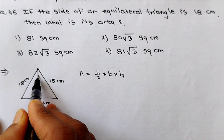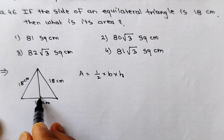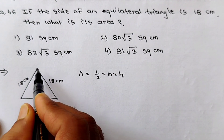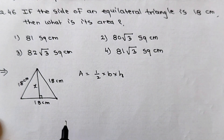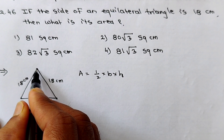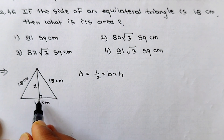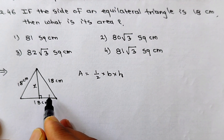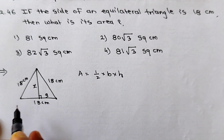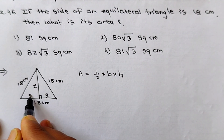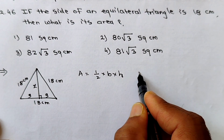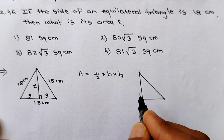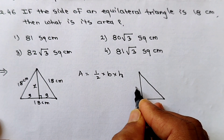We have to calculate the height — the perpendicular distance from vertex to base. Let it be X. This perpendicular distance bisects the base length, so each half must be 9 cm. We now have a right-angle triangle. It becomes very easy to calculate X.